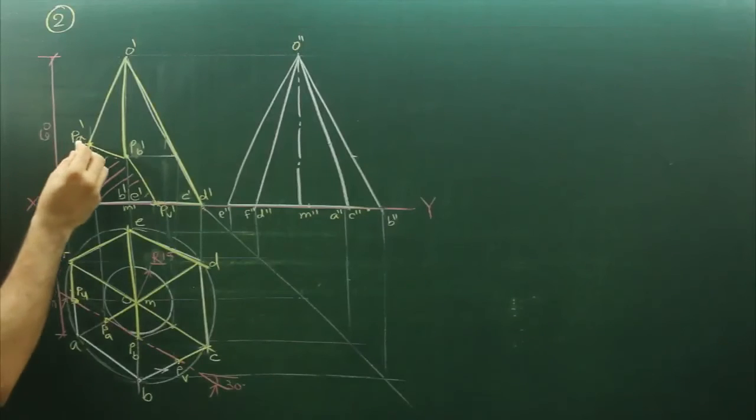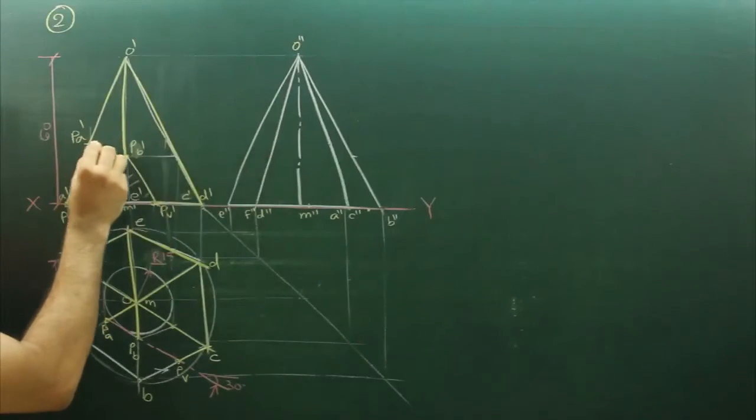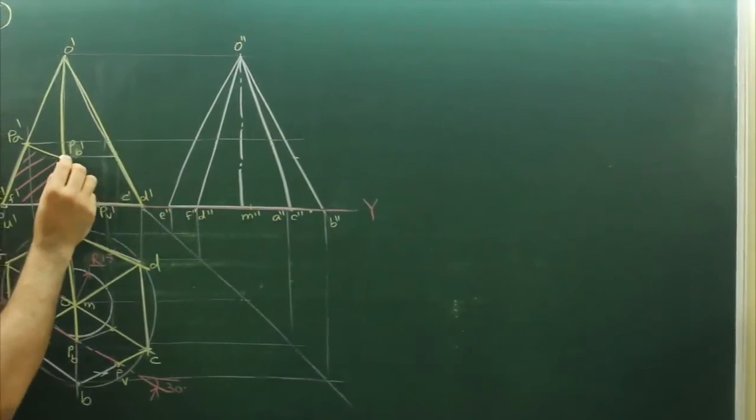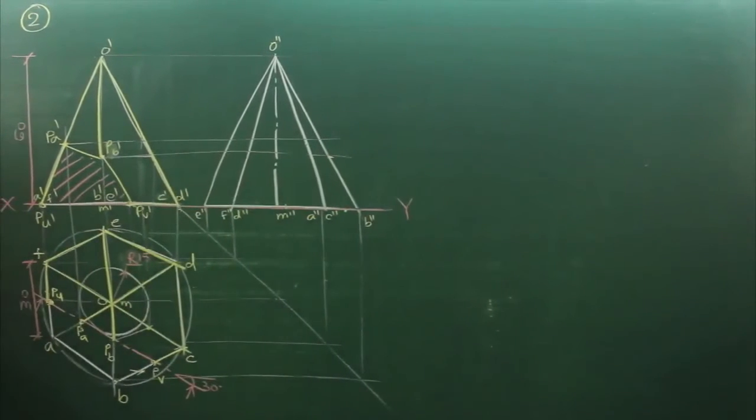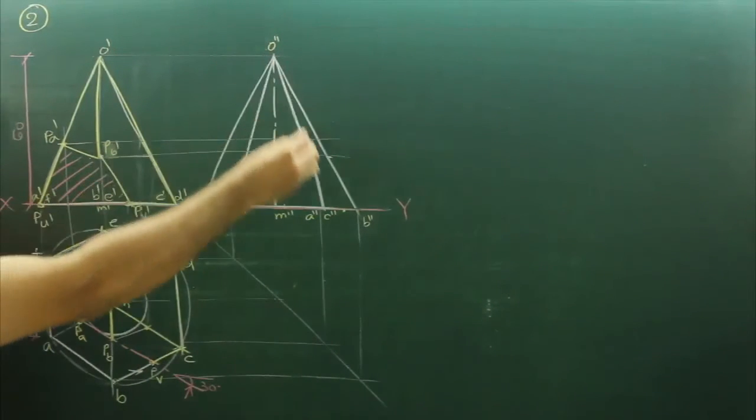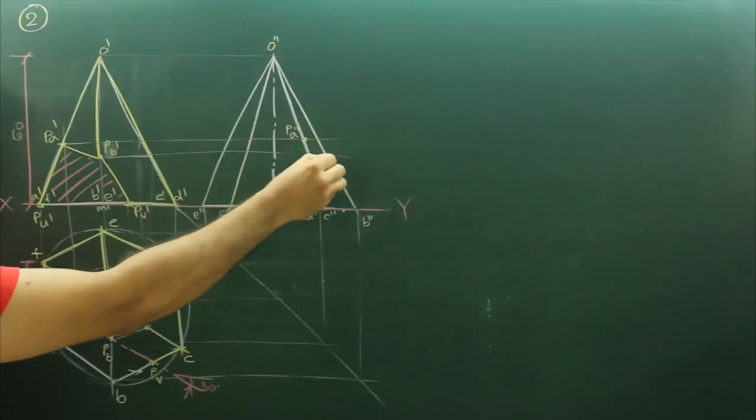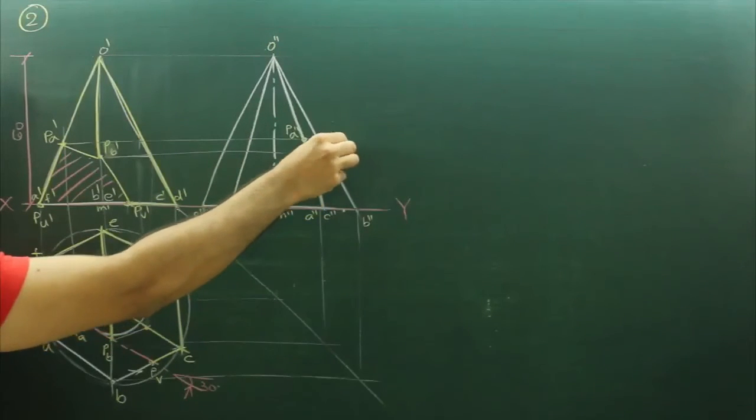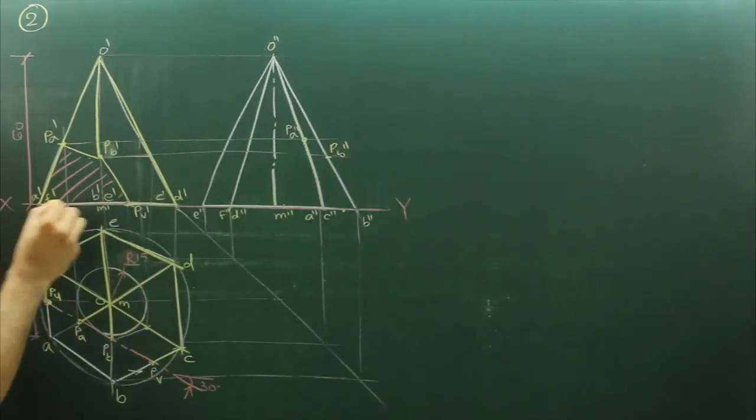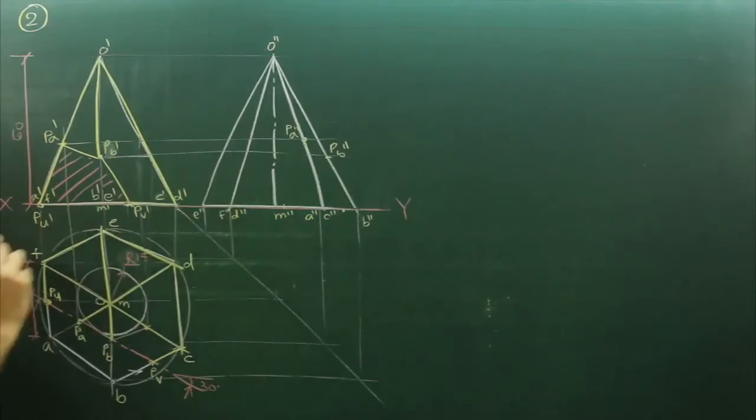So what we will do, we will project from PA prime, we will take points from front view, we will extend PA prime and PB prime, so O prime and A prime wherever it will cut that is PA prime, here it is PV prime. Now PU prime we can't take it from front view, so we will take it from top view. So we will extend PU prime from here, it will cut here, this is PU prime.